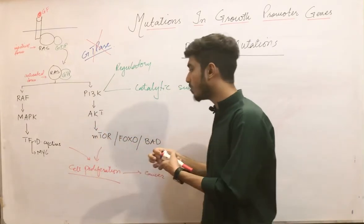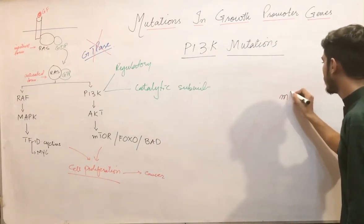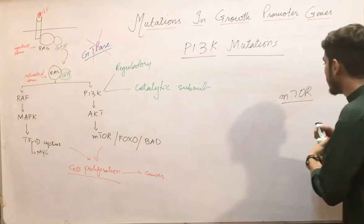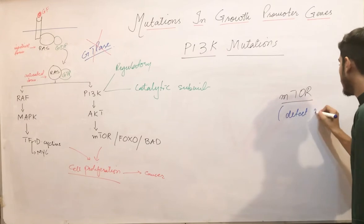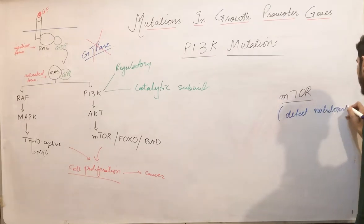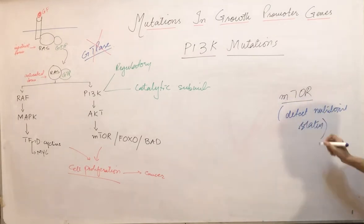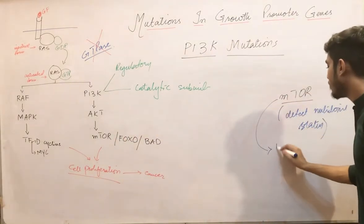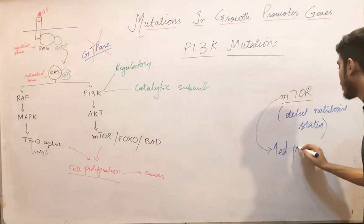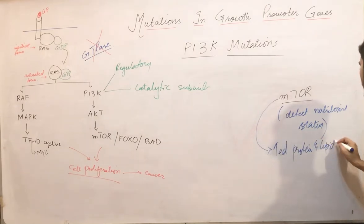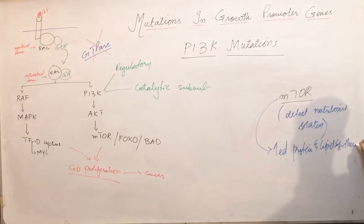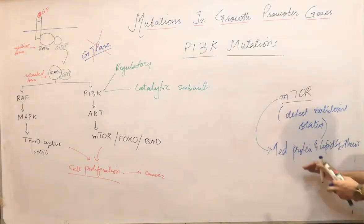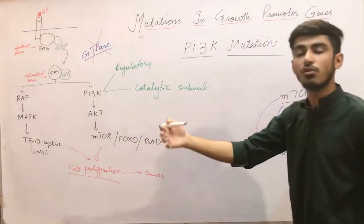The first substrate: AKT activates mTOR. mTOR detects the nutritional status of the cell. When AKT activates mTOR, it increases protein and lipid synthesis, leading to cell growth.